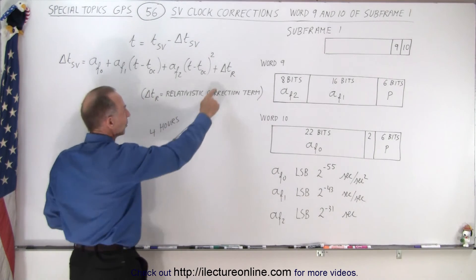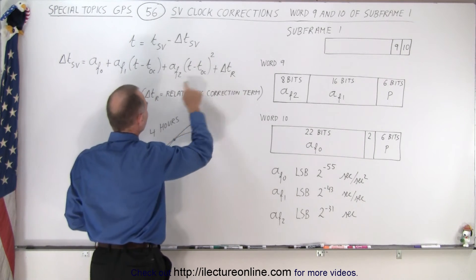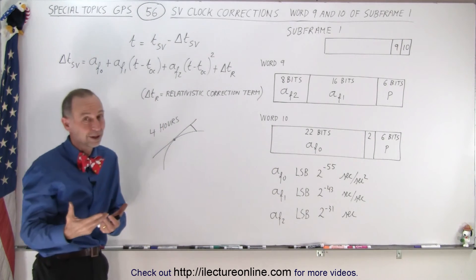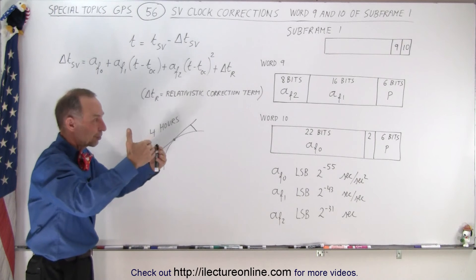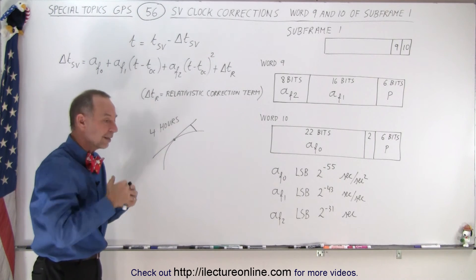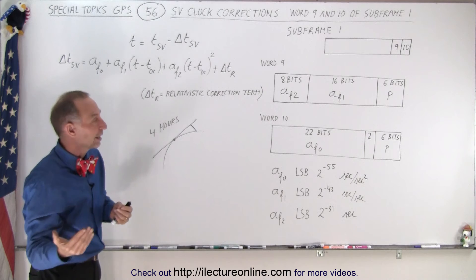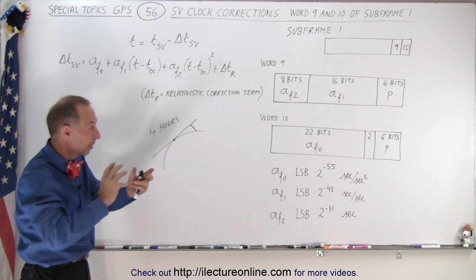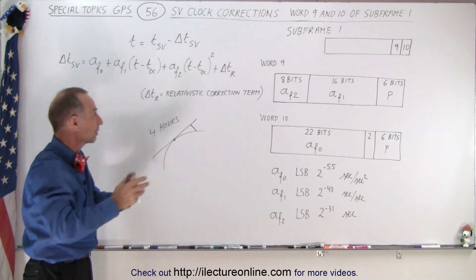Notice we have one more correction term, we have that delta T sub R where delta T sub R is the relativistic correction term. Because we of course being that far away from the earth's gravitational field we can see that time will run a little faster and then because the satellites move so far so fast time will run a little bit slower so we do have to adjust for that relativistic correction.